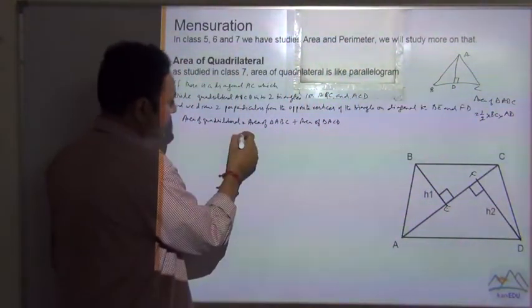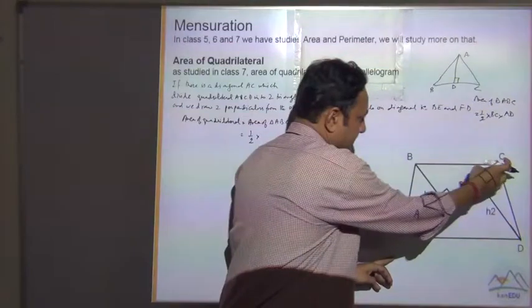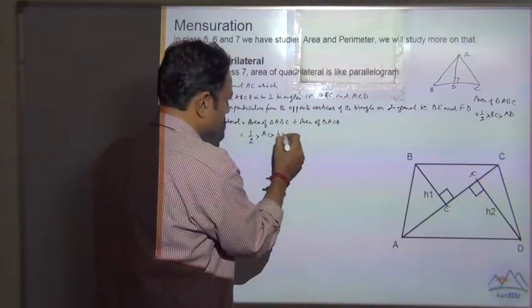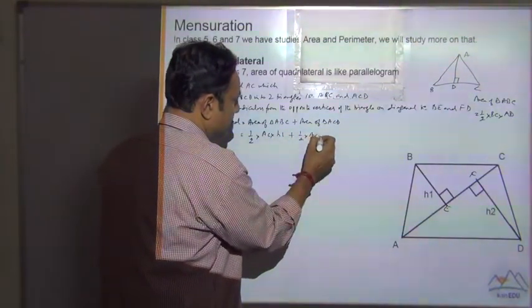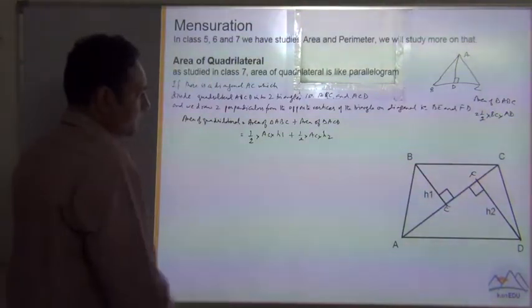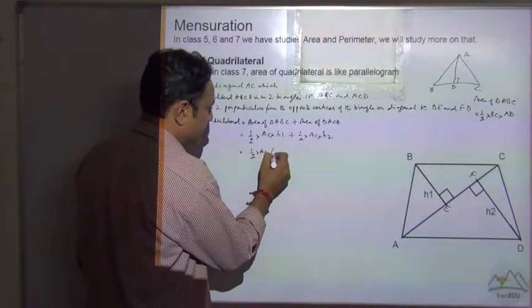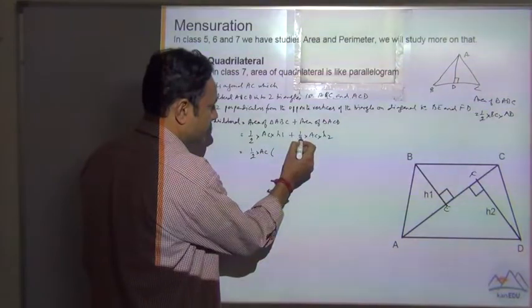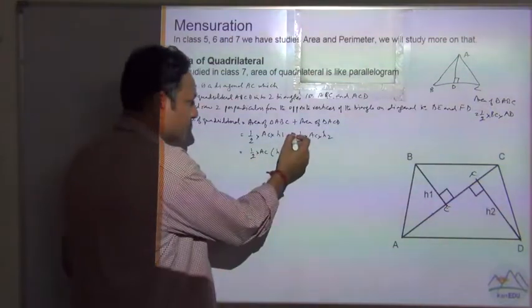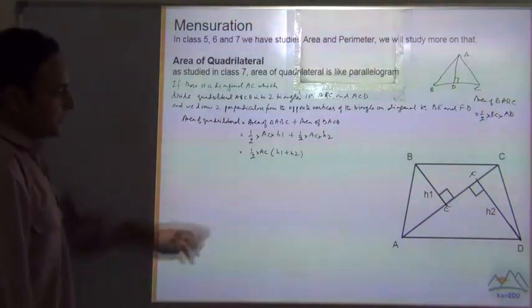So area of triangle ABC is equal to 1 by 2 and base here is the AC multiplied by the height which is the H1 plus 1 by 2 AC into height, this is the height perpendicular height which will be H2. So if we take the common 1 by 2 AC, then the distributive property, these two are common H1 and this plus sign is common and then add this H2.